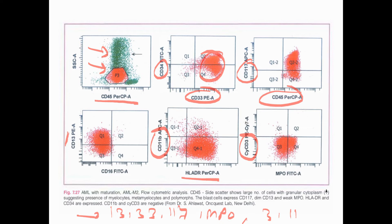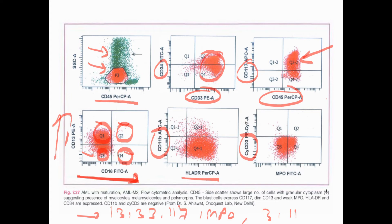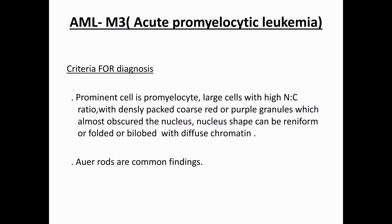To interpret flow cytometry charts: there are four quadrants — Q1, Q2, Q3, Q4. If red dots fall in Q2, both vertical and horizontal markers are positive. If in Q3, both are negative. If in Q1, only vertical marker is positive. If in Q4, only horizontal marker is positive. For example, CD45/CD117 positive in Q2 means both positive; MPO and cytochrome-3 negative in Q3 means both negative.